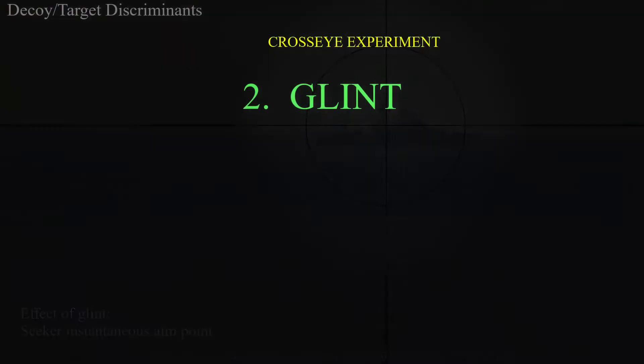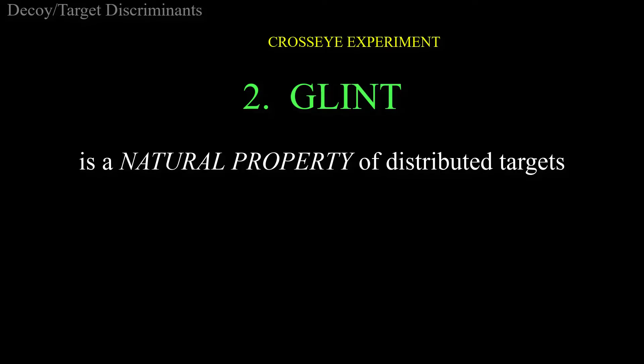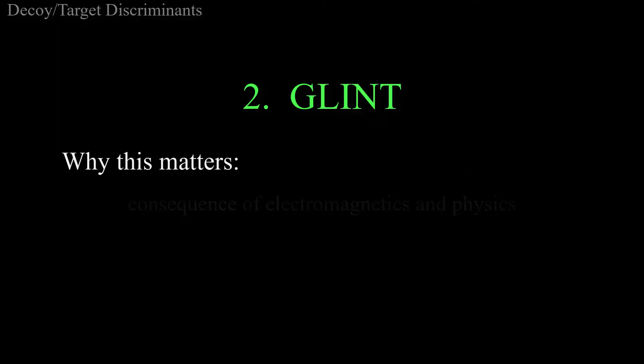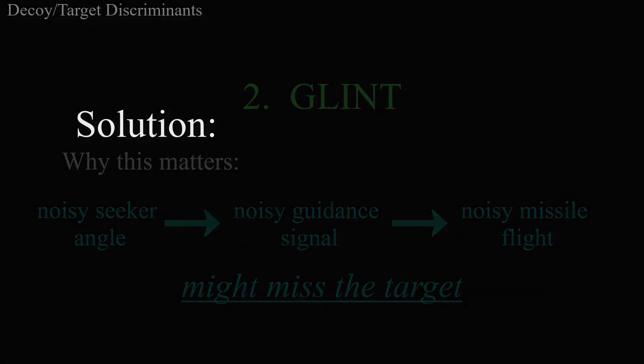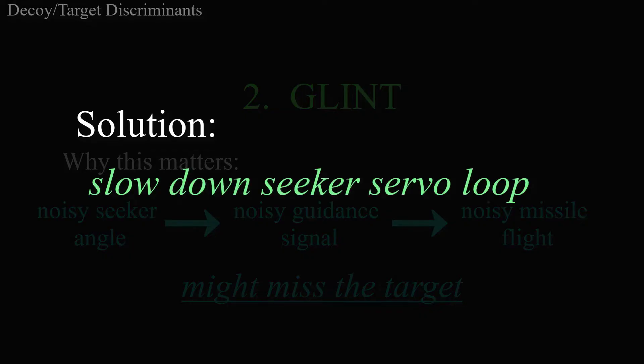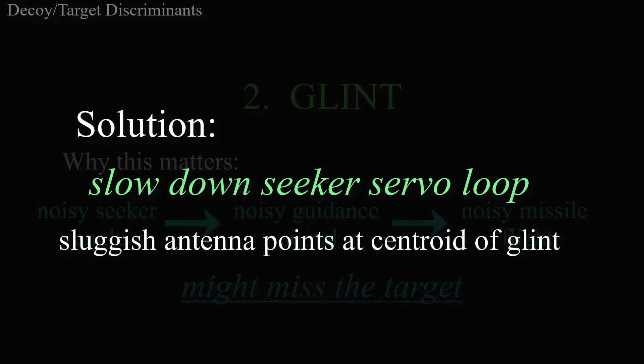They also discovered there is absolutely no way around glint. It is an electromagnetic property of physically distributed targets. It is a fact of life. Glint causes the missile designers heartburn because a noisy angle signal from the seeker causes noisy guidance signals, and that means a jiggly flight and maybe even bad enough for the missile to miss the ship. Back in the day, the only way to fix this problem was to make the seeker antenna's servo loop so sluggish that it can't follow the instantaneous demanded pointing direction. Instead, it sort of points at the average of the glint signal, which is somewhere inside the physical bounds of the ship, and that's good enough for the missile to hit the ship.